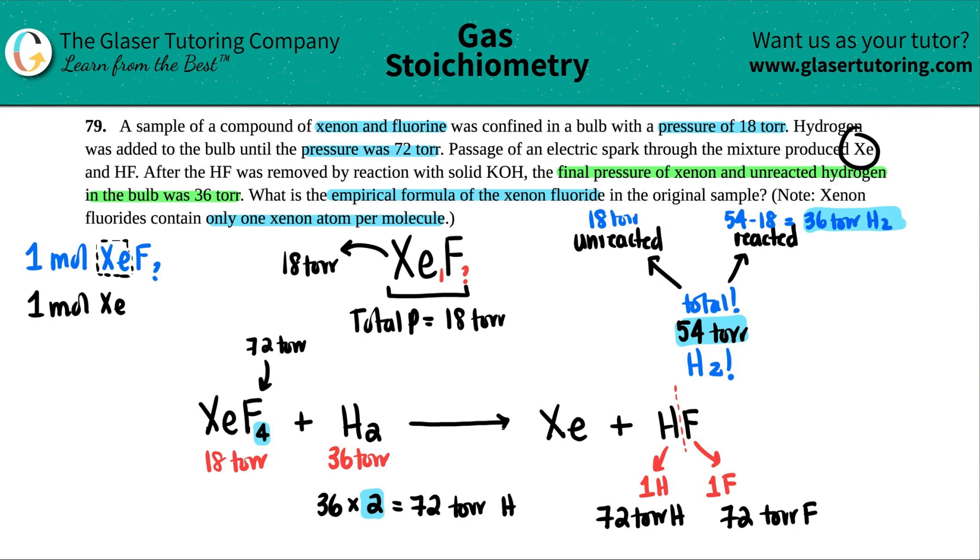That is your empirical formula. The empirical formula for the xenon fluoride is XeF4. This one was mostly theoretical, guys, but I hope this helped. Please let me know in the comments. Subscribe to the channel if you want to help us out. Thank you so much for viewing the video. Good luck on your tests and quizzes, and I will see you all in later lessons. Bye-bye.